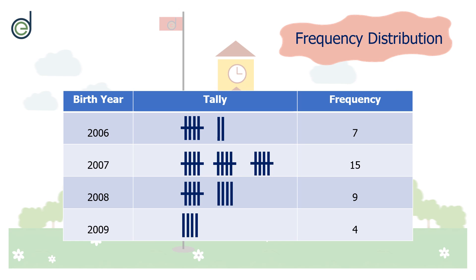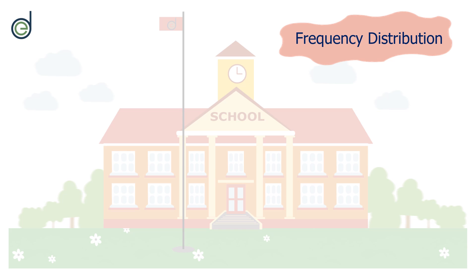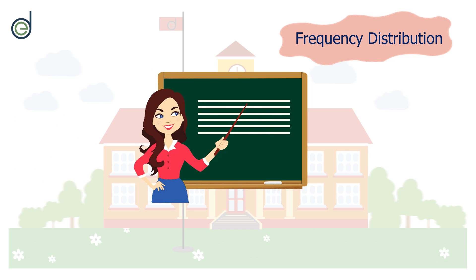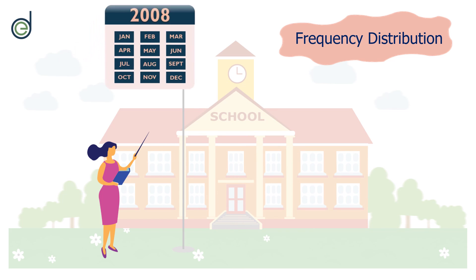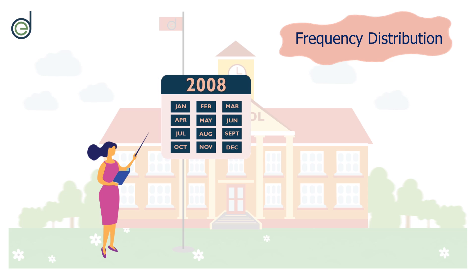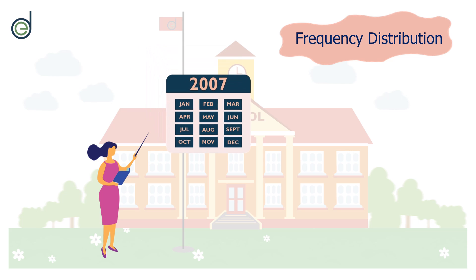After arranging the data in a tabular form, Miss Elsa could easily analyze and interpret the information. The main use of a frequency distribution table is to easily analyze and interpret information. For example, if the appropriate age year for Miss Elsa's class was 2008, she knew how many students were older or younger. She could also easily identify that most of the students in the class were born in 2007.